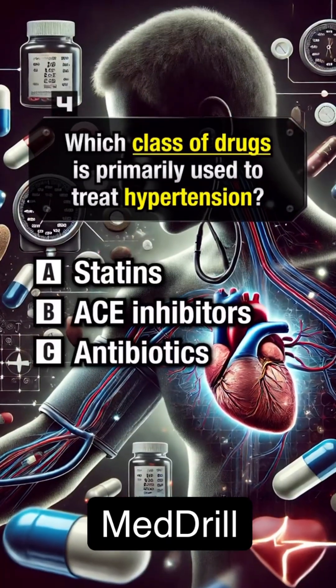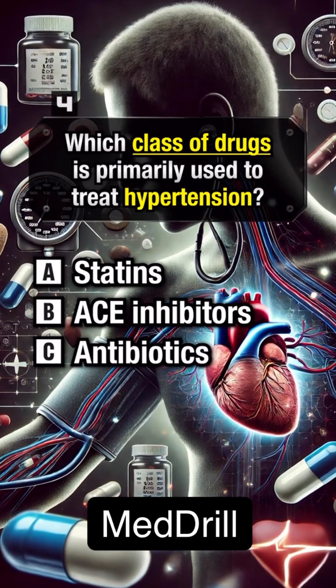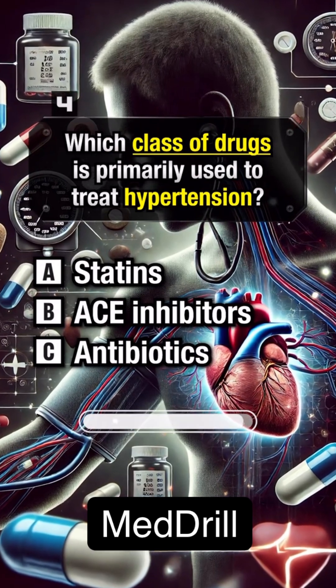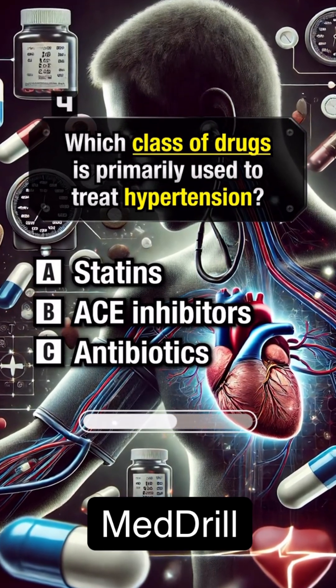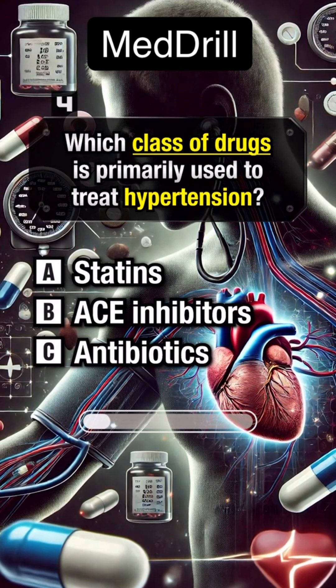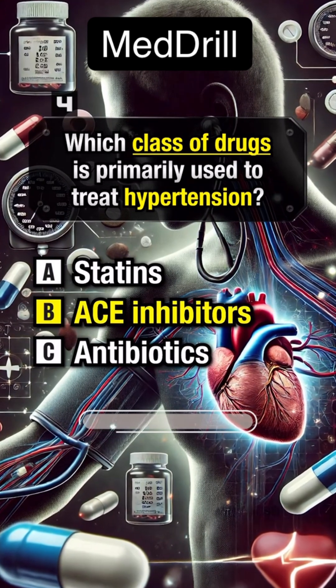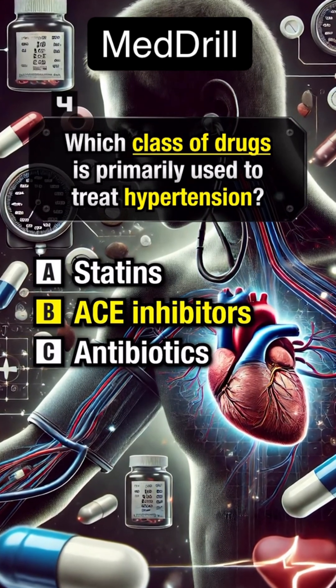Which class of drugs is primarily used to treat hypertension? Answer B. ACE inhibitors.